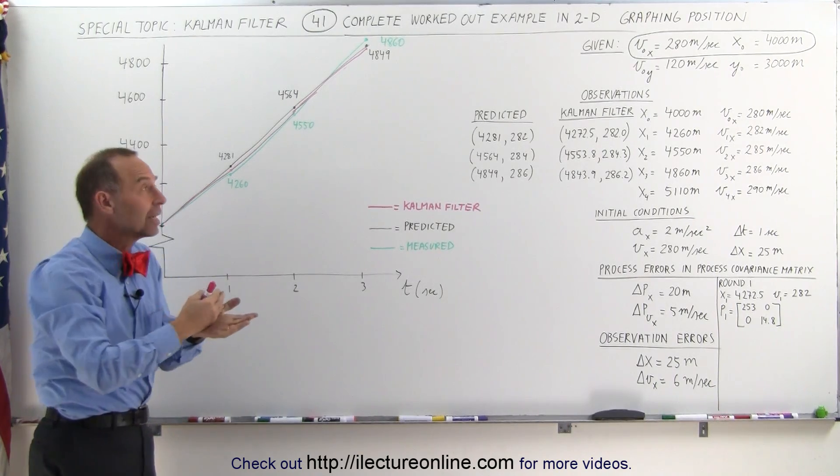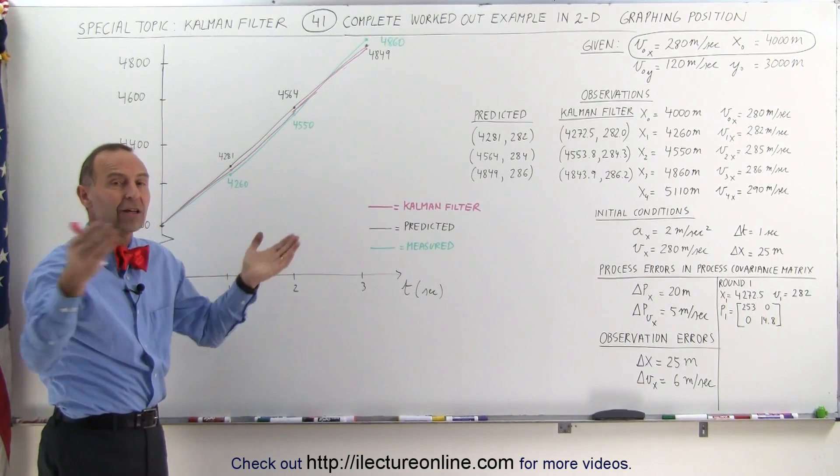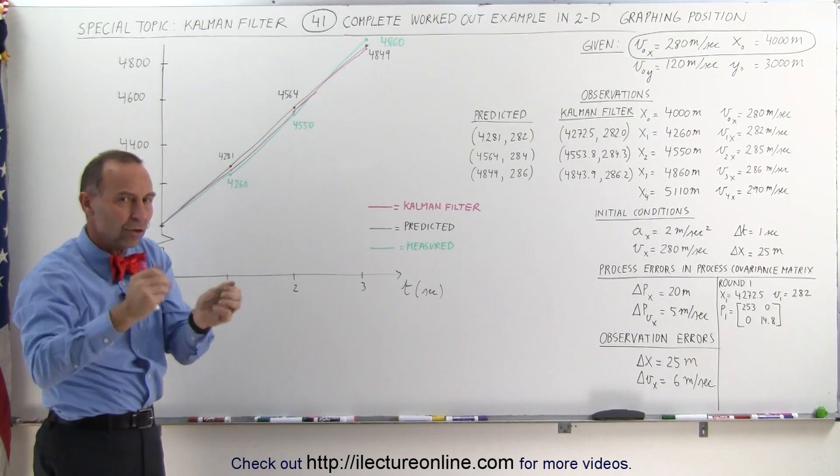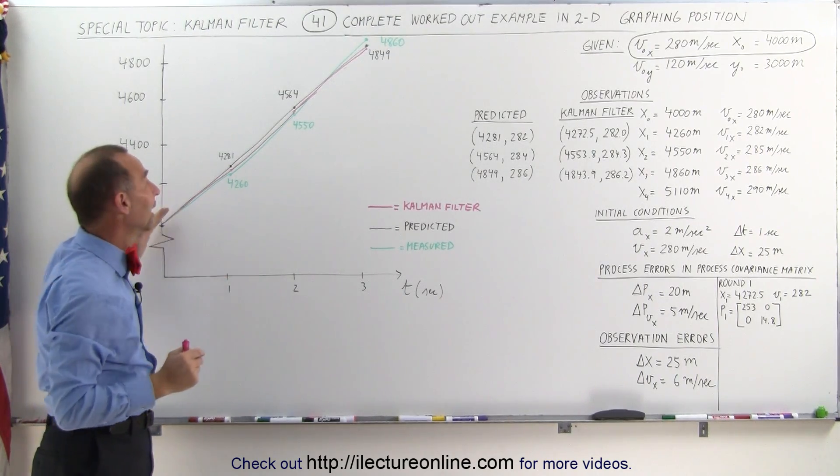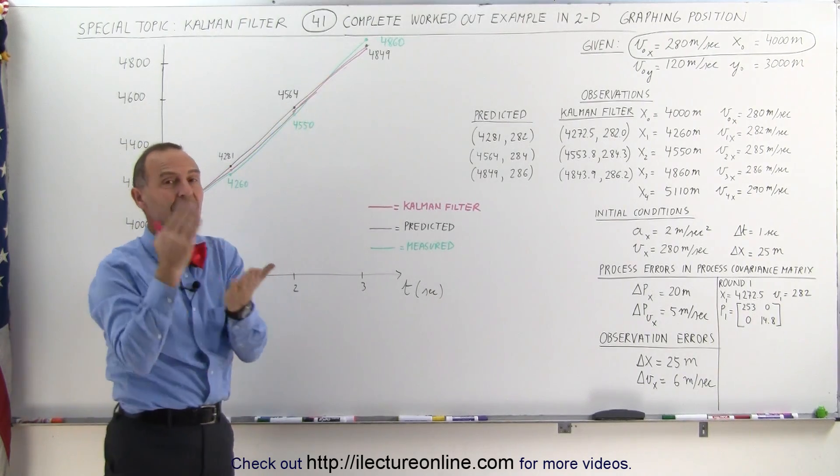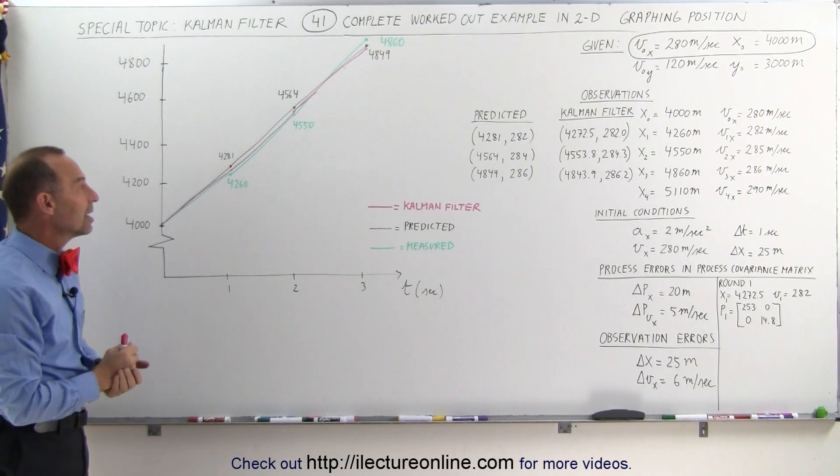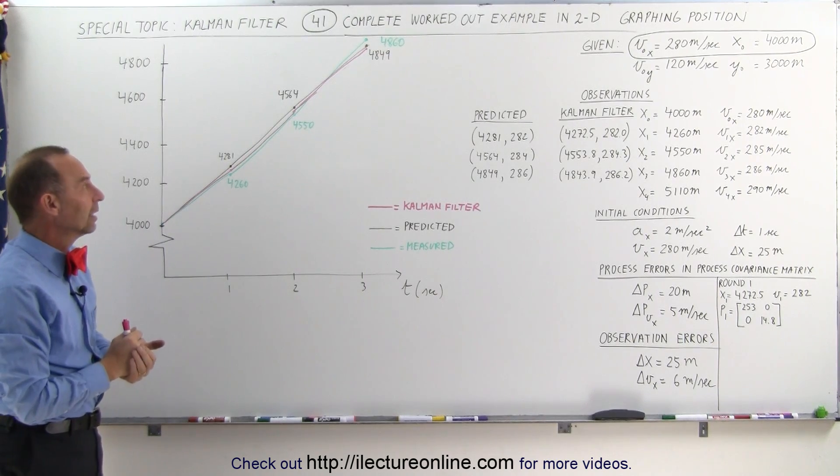So every time you get a new measured value in and you then have a new predicted value, the Kalman filter just combines the two, puts a weight factor between the two depending upon how you've been doing so far, and smooths out that process to get you right into where the actual position and actual velocity of the object that you're tracking is.